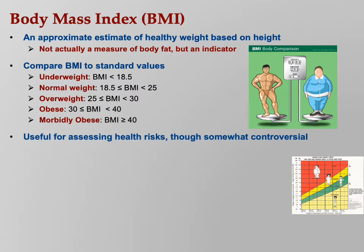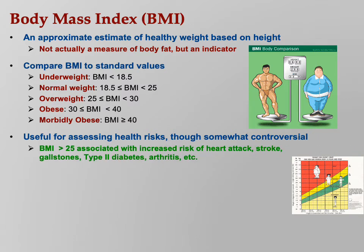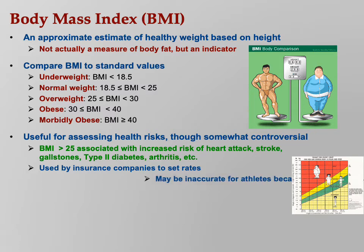This is useful for assessing health risks, although somewhat controversial. BMI over 25 is associated with increased risk of heart attack, stroke, gallstones, type 2 diabetes, arthritis, and other problems. It is used by insurance companies to set rates - that's just the reality. The problem is that it can be inaccurate for athletes because of muscle mass. Look in the upper right hand corner - those two people have the same BMI, but clearly they don't have the same body types. Very muscular people will appear to have an unhealthy BMI although they're actually fine.